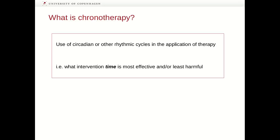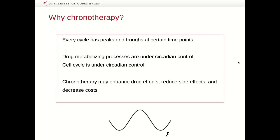Chronotherapy is about the intervention time where it is most effective and or least harmful to apply a medication or some kind of other drug. As every cycle has its peaks and its troughs, there will be certain time points where it's most beneficial to apply a drug. Because drug metabolizing processes are under circadian control and the cell cycle is also under circadian control, we can apply drugs where we know the effect will be greatest, reduce side effects, and possibly decrease the cost of medication.